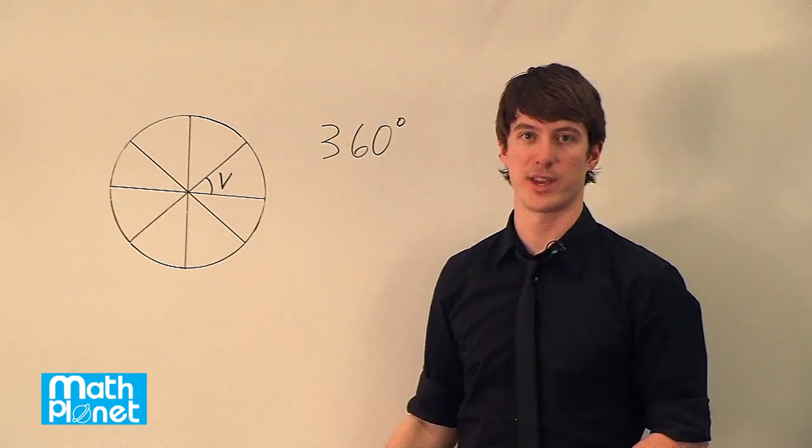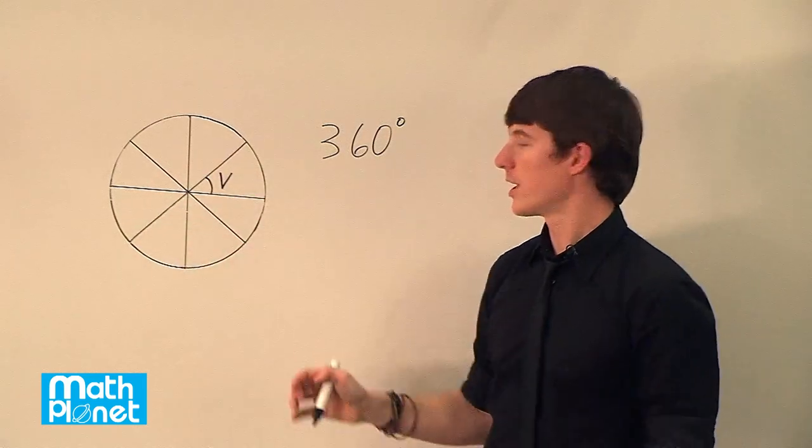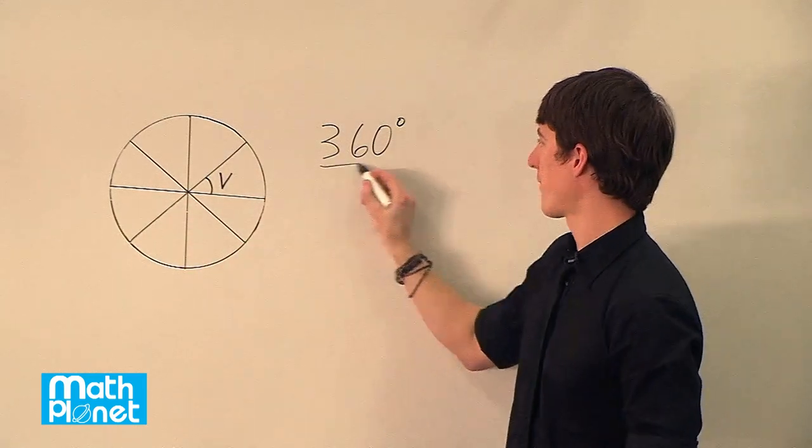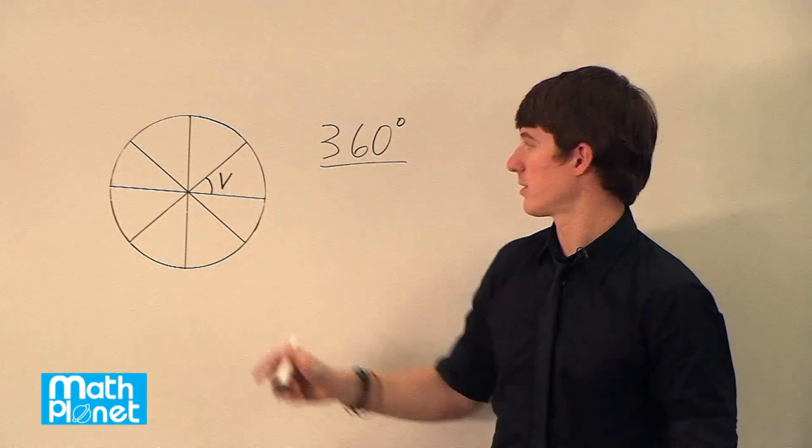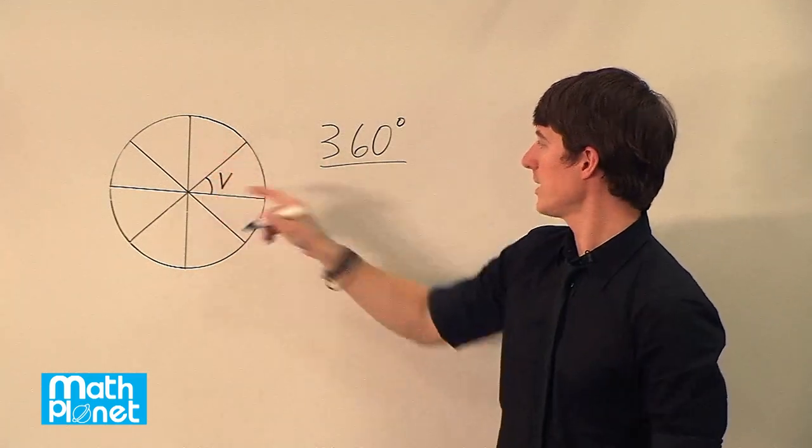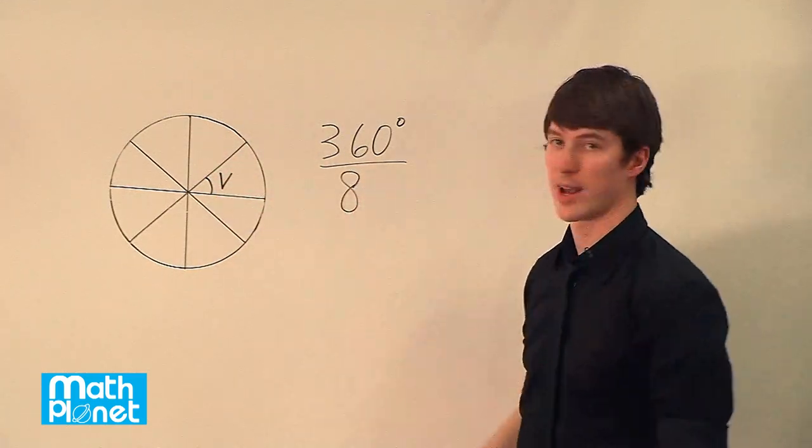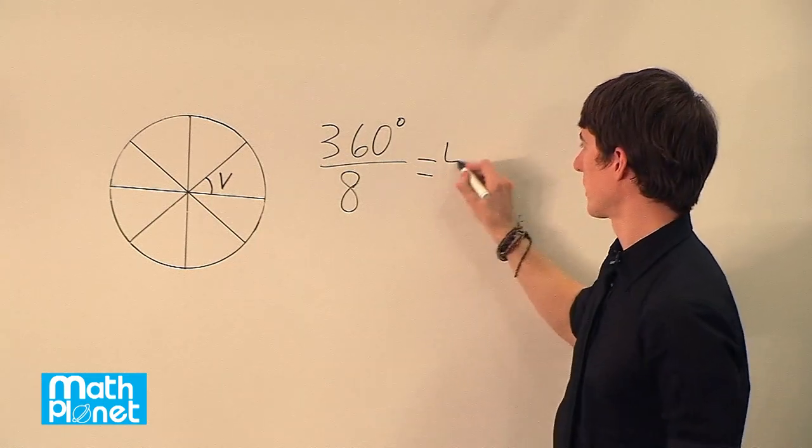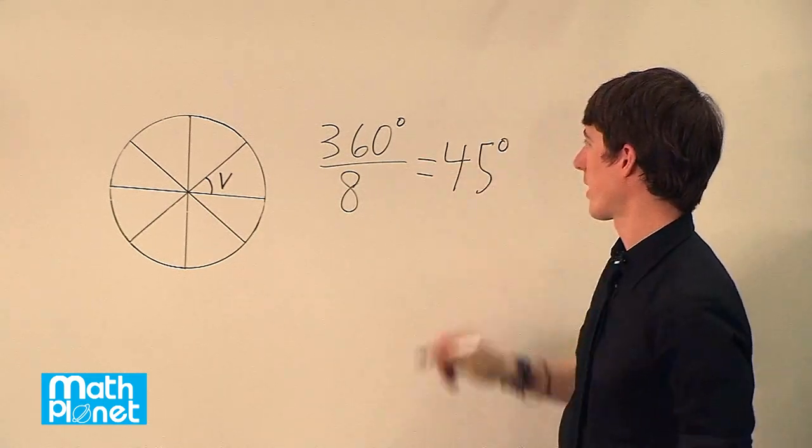If we want to find what this angle V is, which is the same all the way around, then we just take 360 divided by the number of divisions in this pizza pie-shaped looking thing here. So the number is eight, so 360 degrees divided by eight, which is exactly 45 degrees.